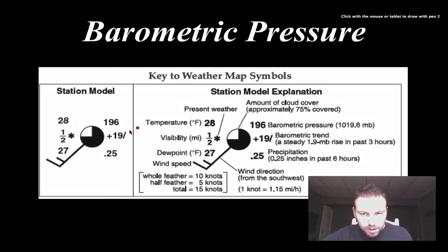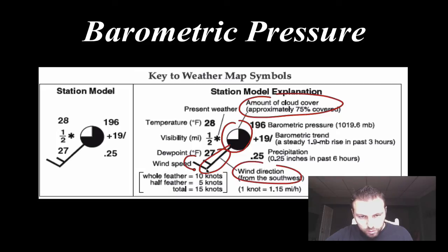But so far, just to recap, we have looked at our cloud cover. We have looked at our wind direction. Our wind speed. And our visibility. So we've looked at these four different variables right here. And when we come up, we're going to be looking at our barometric pressure and barometric trend next. A little bit more difficult. So stay tuned for the next screencast. Have a good one.